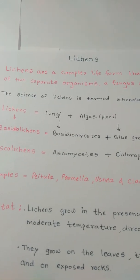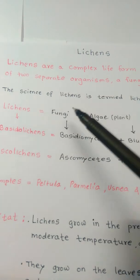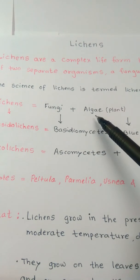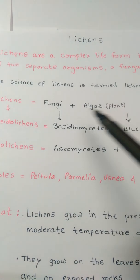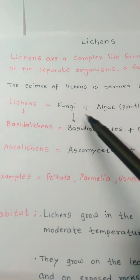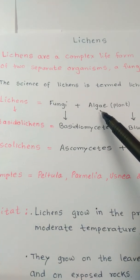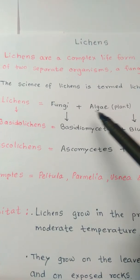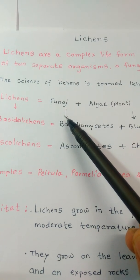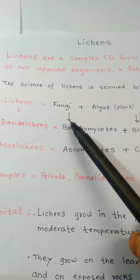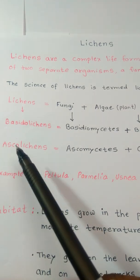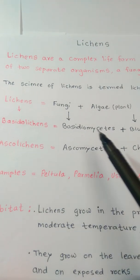Lichens are made from two partners: the Fungi partners and the Algae partners. Algae is a plant; Fungi is not a plant. So the Algae partners prepare food materials, while the Fungi partners provide shelter, water, and minerals to the algal partners.